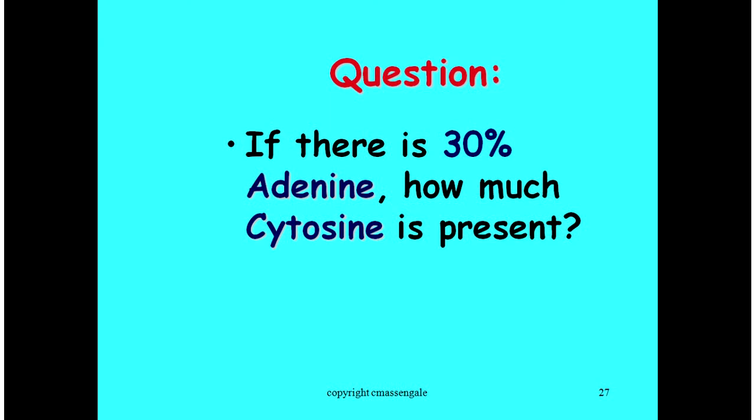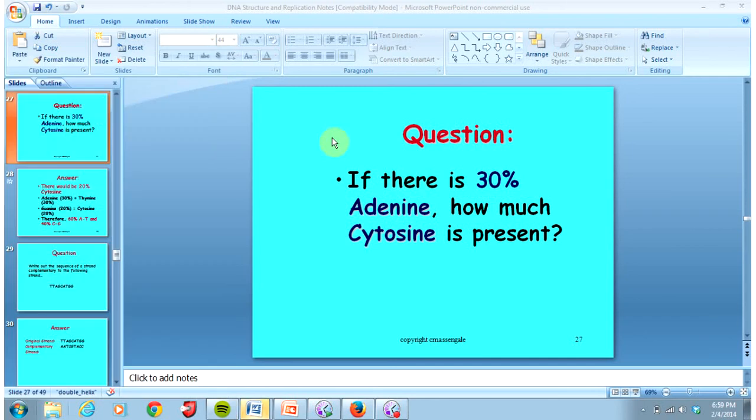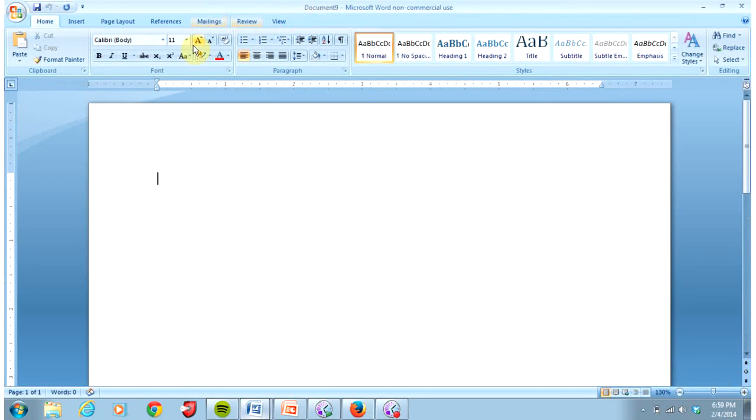Practice question number one asks if you have 30% adenine, how much cytosine do you have present? I'm going to go to a word document right now so that I can do this math problem with you. This is number 30. Unfortunately I don't have a tablet so I can't hand write it out but I'm going to try to do it by typing.